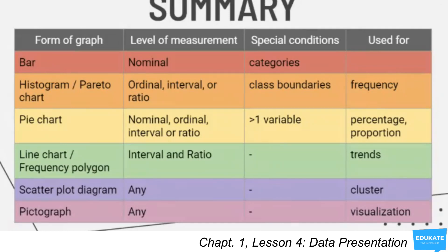Next, you have scatter plot diagram and pictograph. They are for any level of measurement, and there are no special conditions. For scatter plot diagram, it's used for clusters, while for pictograph, it's used for visualization. Based on the characteristics of the common forms of graphs, the following table shows what form of graphs is appropriate to use given the variable's level of measurement, its special conditions, and what the graph is generally used for.